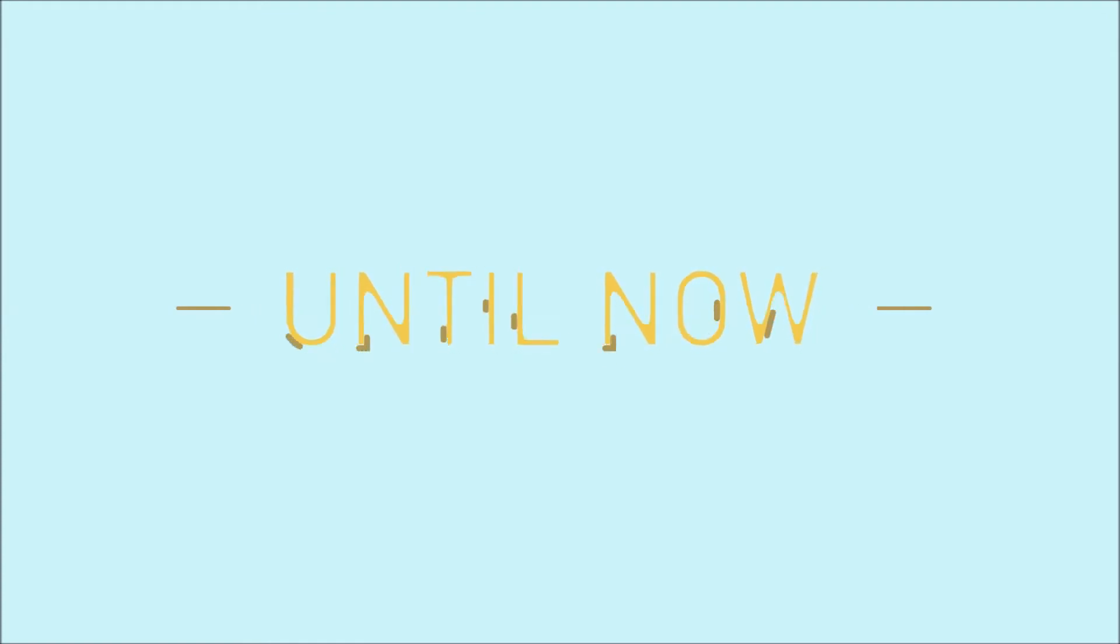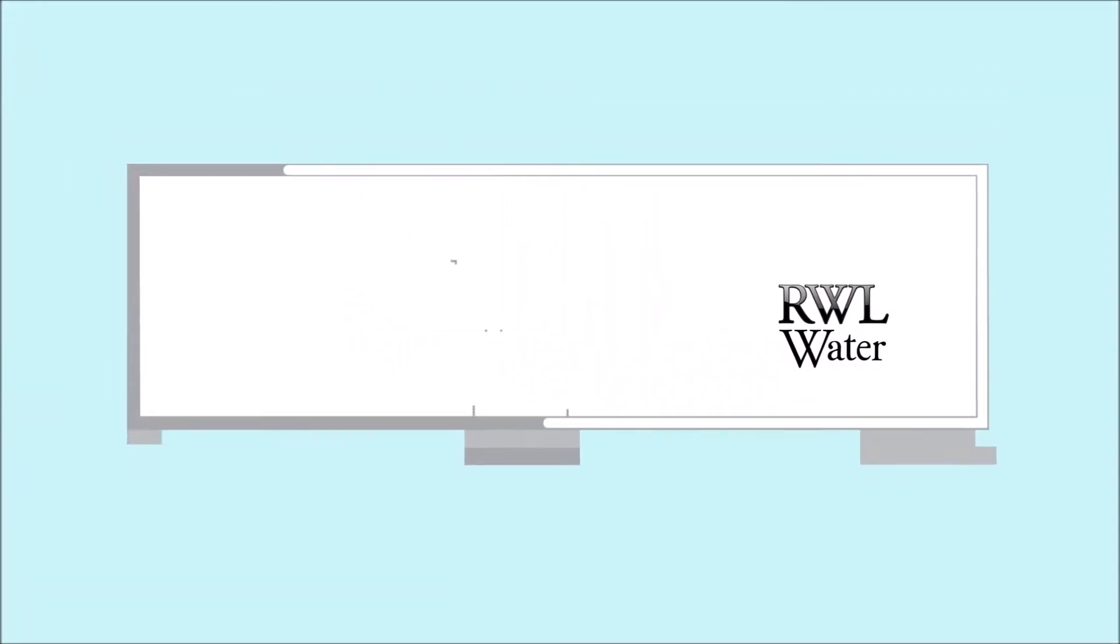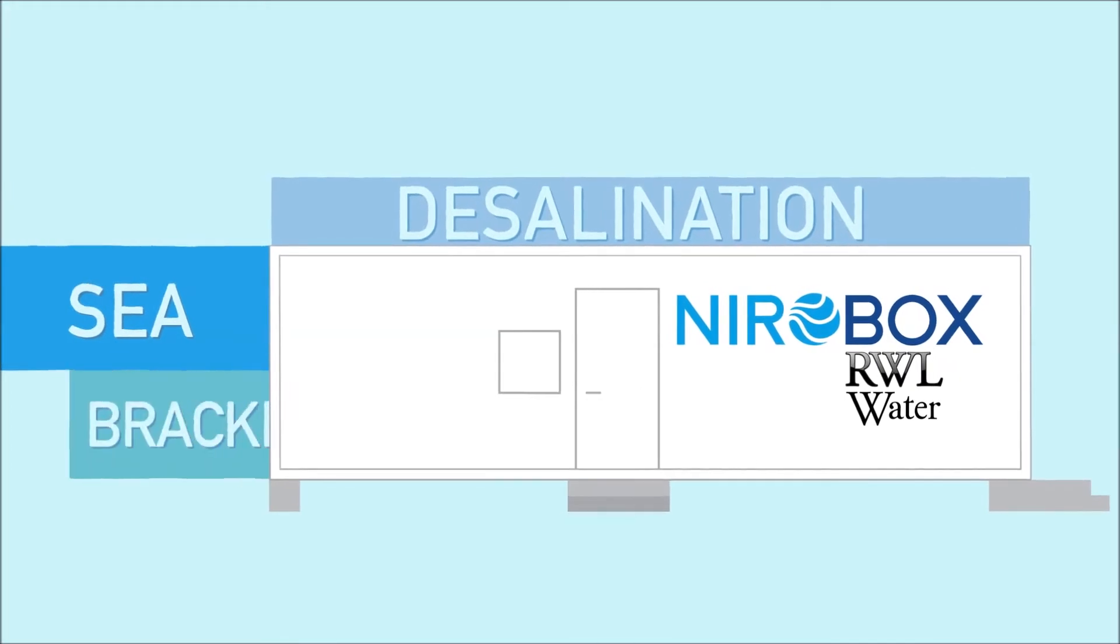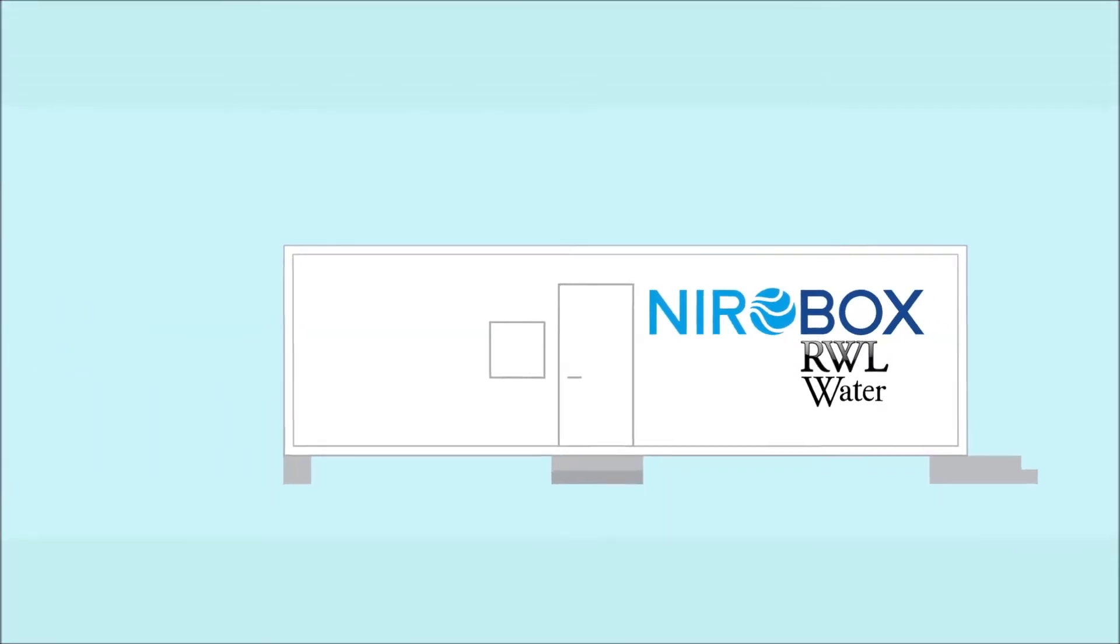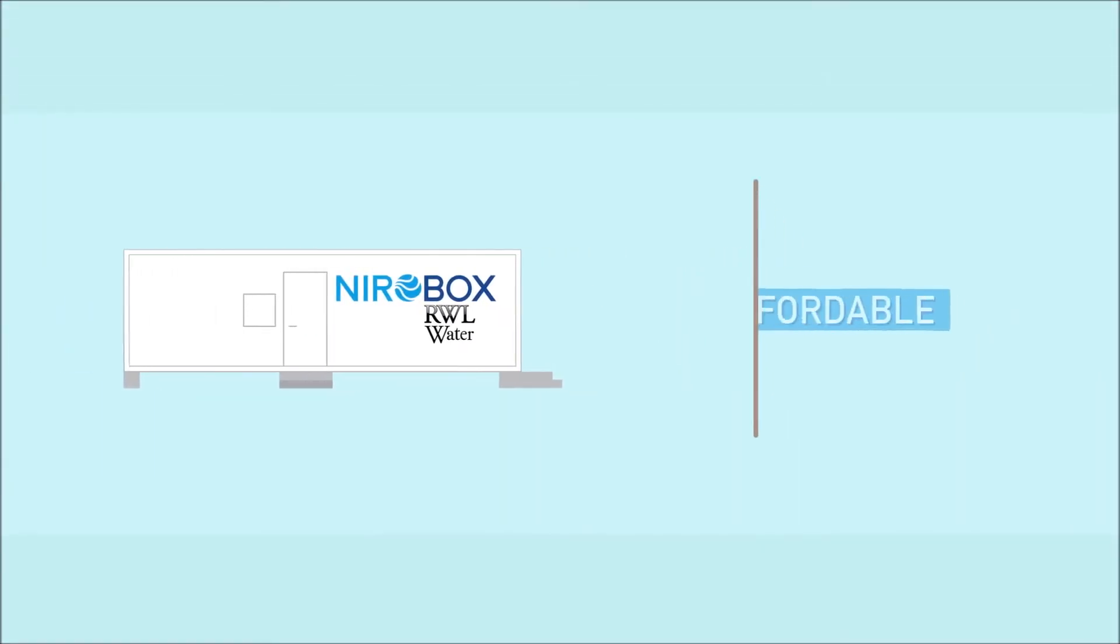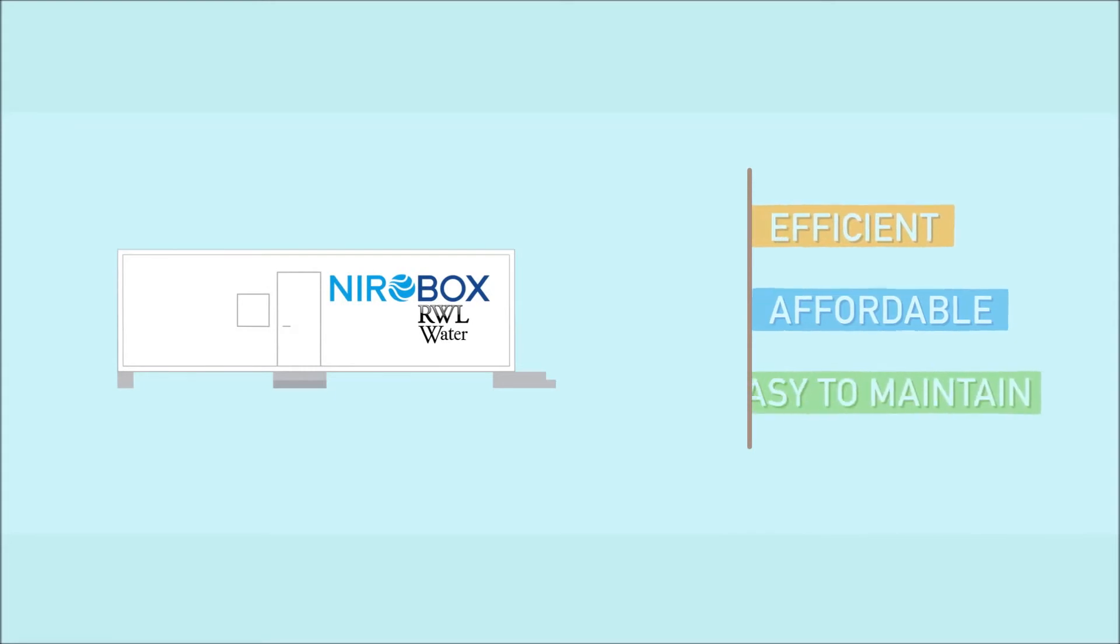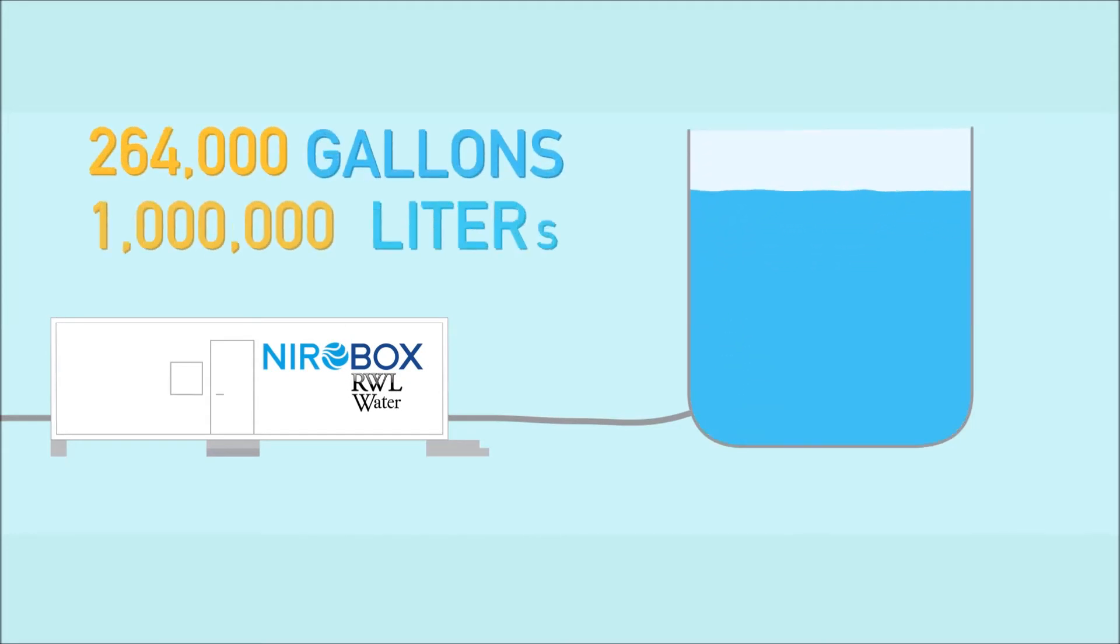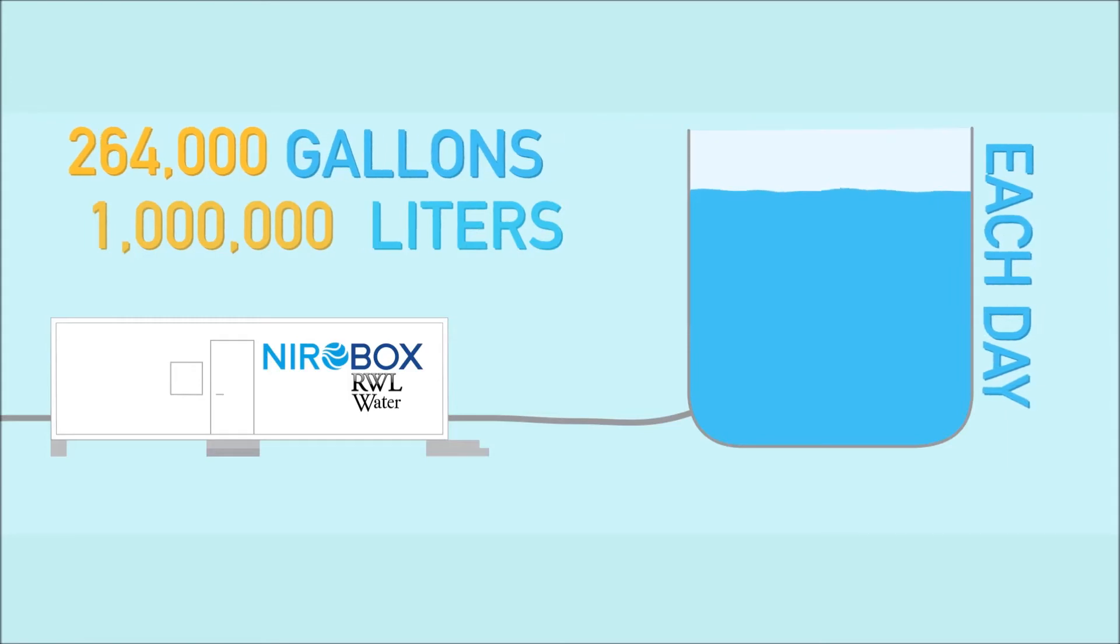Until now. RWL Water is challenging convention with a new containerized desalination solution, NeroBox. The NeroBox provides desalination of seawater and brackish water in a small, plug-and-play system that's affordable, efficient, and easy to maintain. A single NeroBox unit can produce as much as 264,000 gallons, or 1 million liters, of high-quality drinking water each day.